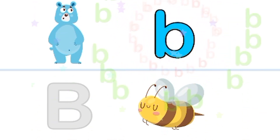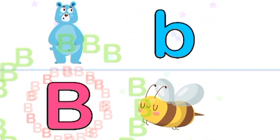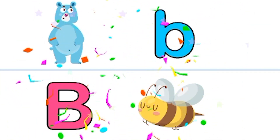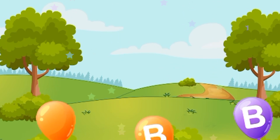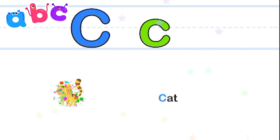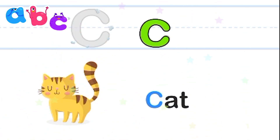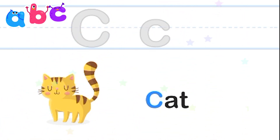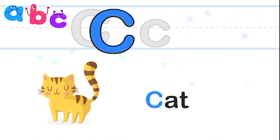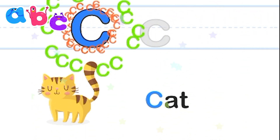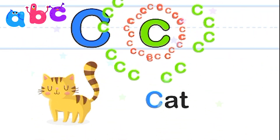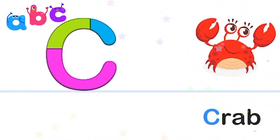B. Well done. Bye-bye. Let's start. C is for cat. C. Smart. C is for crab.